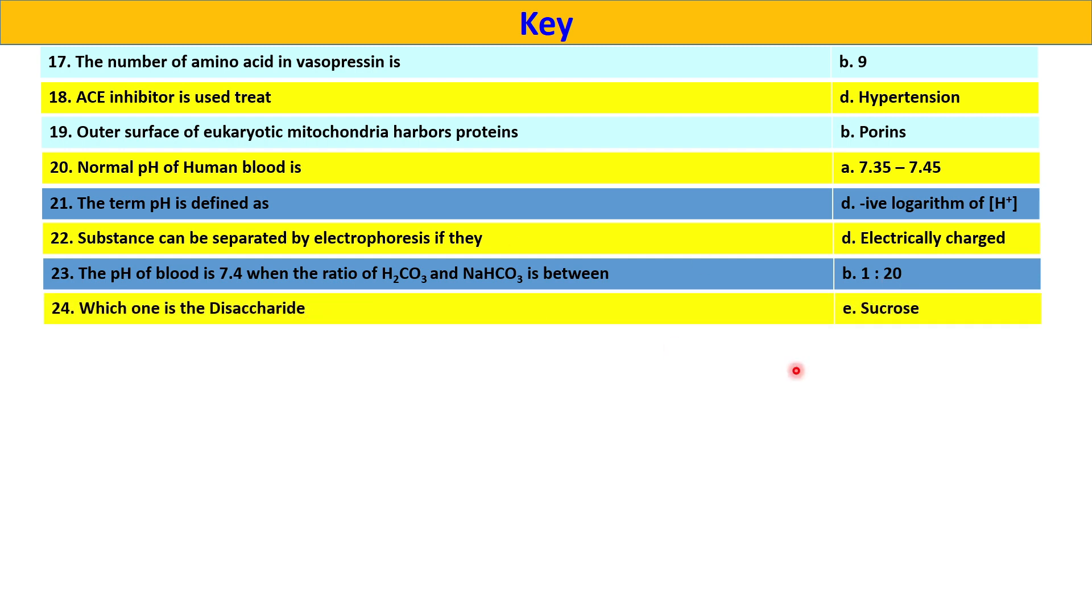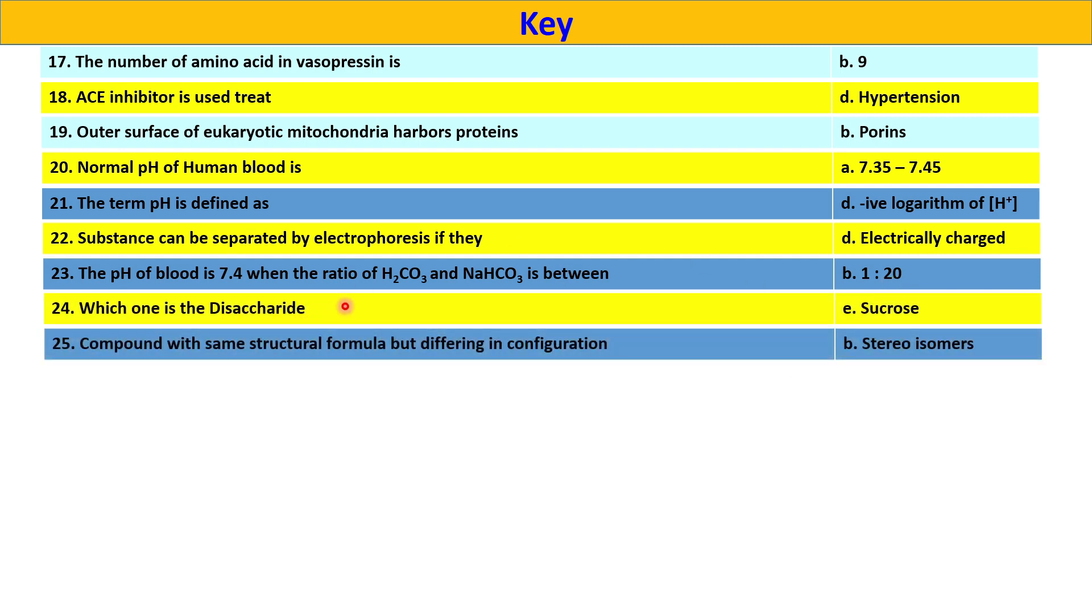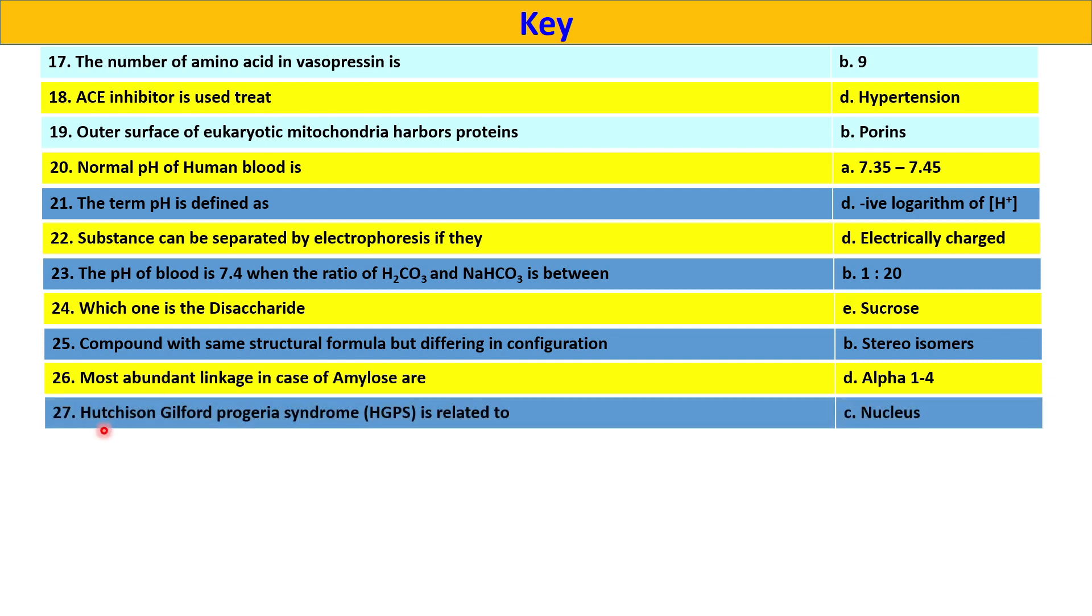Which one is the disaccharide? Sucrose. Compound with same structural formula but different in configuration is known as option B, stereoisomers. Most abundant linkage in case of amylose is alpha-1,4. Hutchinson Gilford Progeria syndrome HGPS is related to nucleus because the gene present in the nucleus and mutation causes this HGPS syndrome.